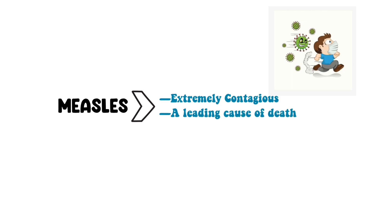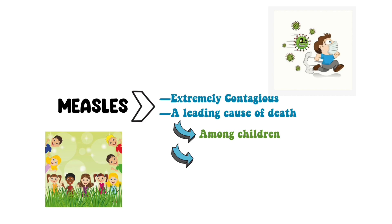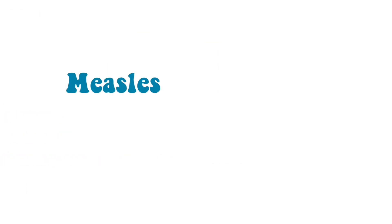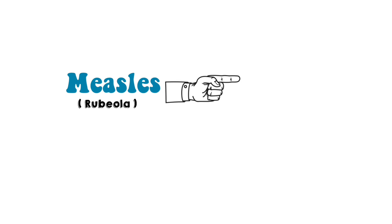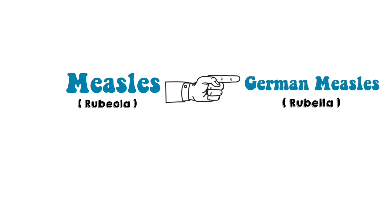Measles remains a leading cause of death, especially among young children and especially in areas with low rates of vaccination. Measles is also called rubeola, which can easily be confused with German measles, also called rubella — similar sounding names but very different viruses.